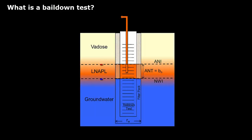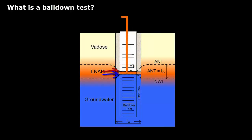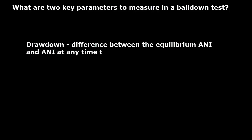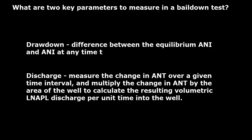What is a bail-down test? Starting from equilibrium, the LNAPL in a well is removed, causing a drop in the air-NAPL interface and reduced apparent NAPL thickness. As LNAPL discharges from the formation to the well, the apparent NAPL thickness increases and drawdown decreases until they reach equilibrium. Drawdown and discharge are the two key parameters measured in a bail-down test. For unconfined LNAPL, drawdown is the difference between the equilibrium air-NAPL interface and the air-NAPL interface at any time t during the test. Discharge is calculated by measuring the change in air-NAPL and NAPL-water interfaces over time to get the change in apparent NAPL thickness, then multiplying by the well area to calculate volumetric LNAPL discharge.